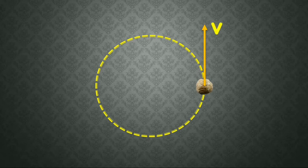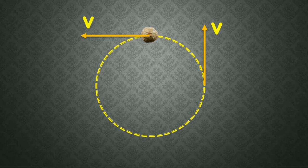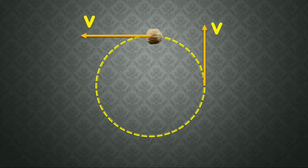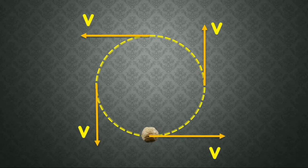Now let us take one more point on the circular path. If you release the stone there, it will go in the arrow direction — the velocity is acting in that direction. In the first case it is acting towards the north and in the second case towards the west. Let us take one more point — the velocity is acting in the south direction. And one more point — it is acting in the east direction. By checking the velocity direction at four points, they will have different directions.